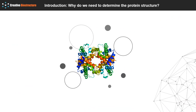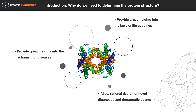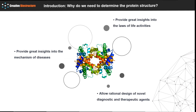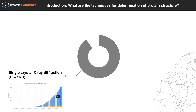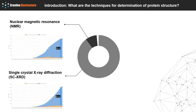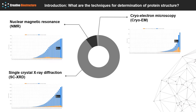Why do we need to determine the protein structure? The three-dimensional structure of proteins and protein complexes provides great insights into the laws of life activities and mechanisms of diseases, thereby allowing rational design of novel diagnostic and therapeutic agents. There are three main research techniques for protein structure determination: Single Crystal X-ray Diffraction, Nuclear Magnetic Resonance, and Cryoelectron Microscopy. However, there is no all-purpose method since all three offer unique advantages as well as limitations.